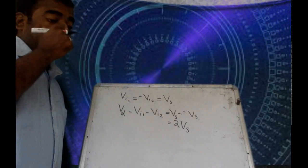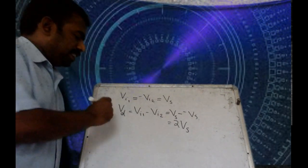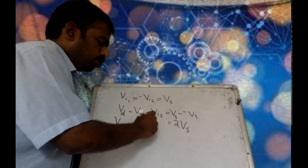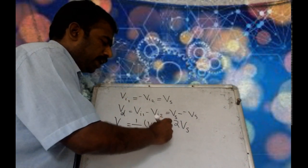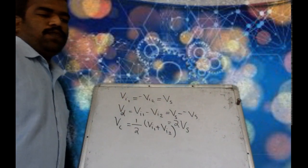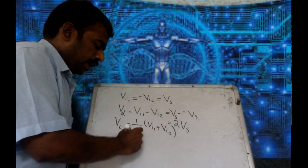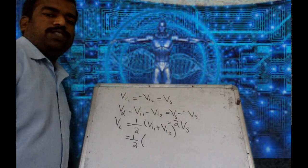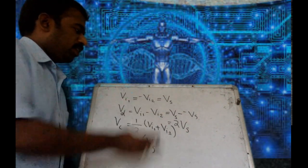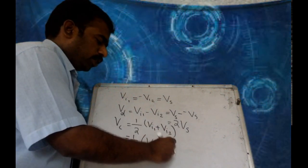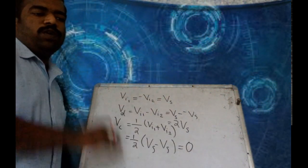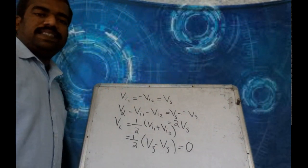And what is the common mode voltage Vc? Vc is the average between these two signals: half of Vi1 plus Vi2. Vi1 is Vs and Vi2 is minus Vs, so you will get Vc equal to 0. The common mode voltage is 0 here.